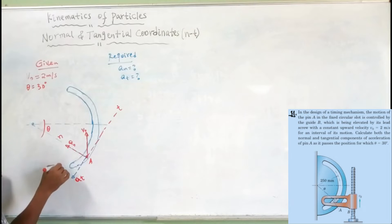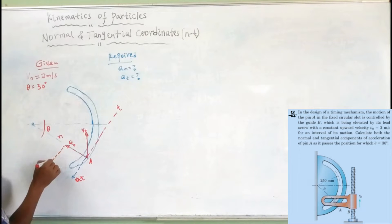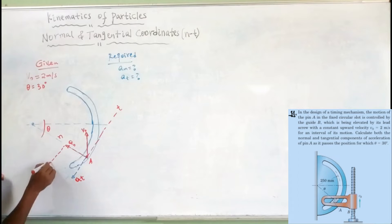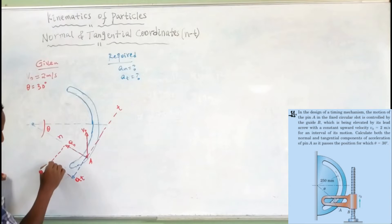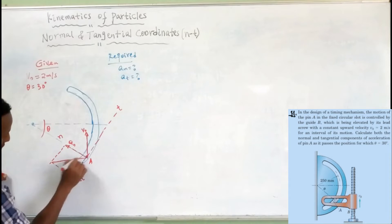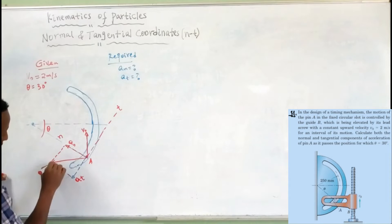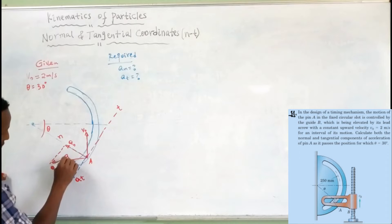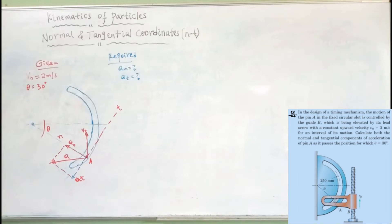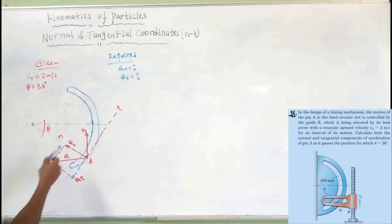If we are interested to calculate the magnitude of the acceleration, we can draw like this. This is called the magnitude of the acceleration. So in a diagonal — in a normal — solution.